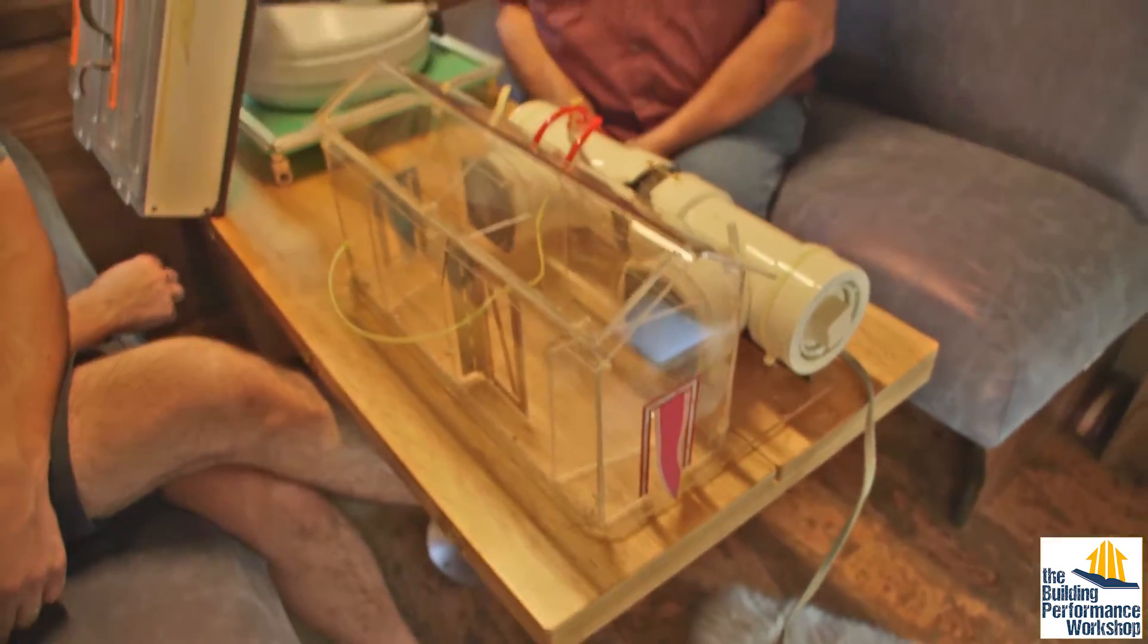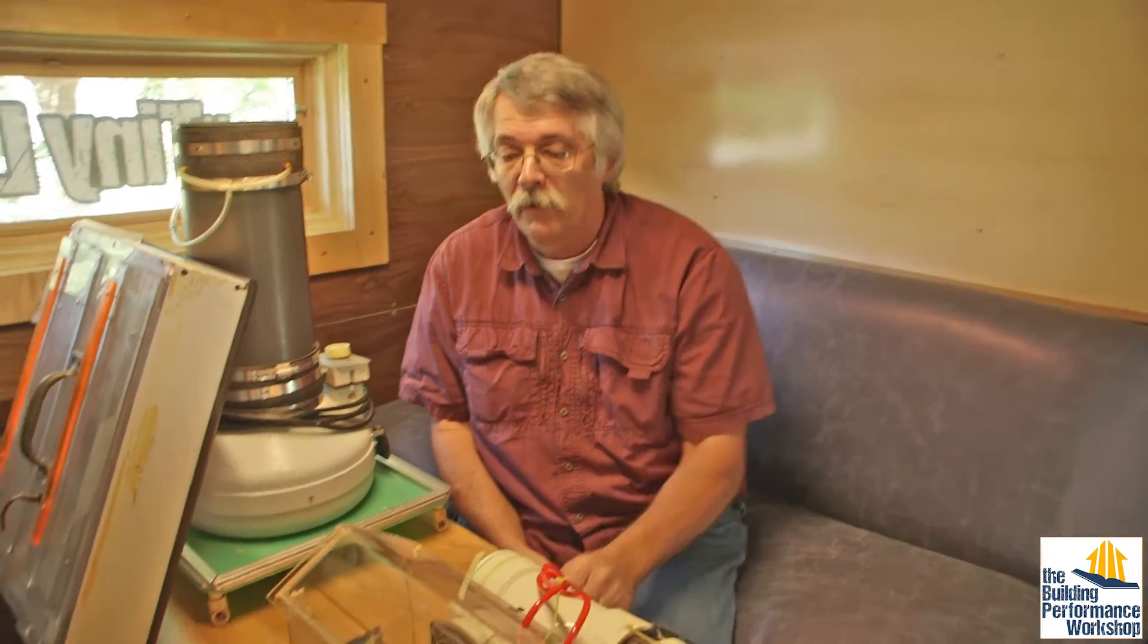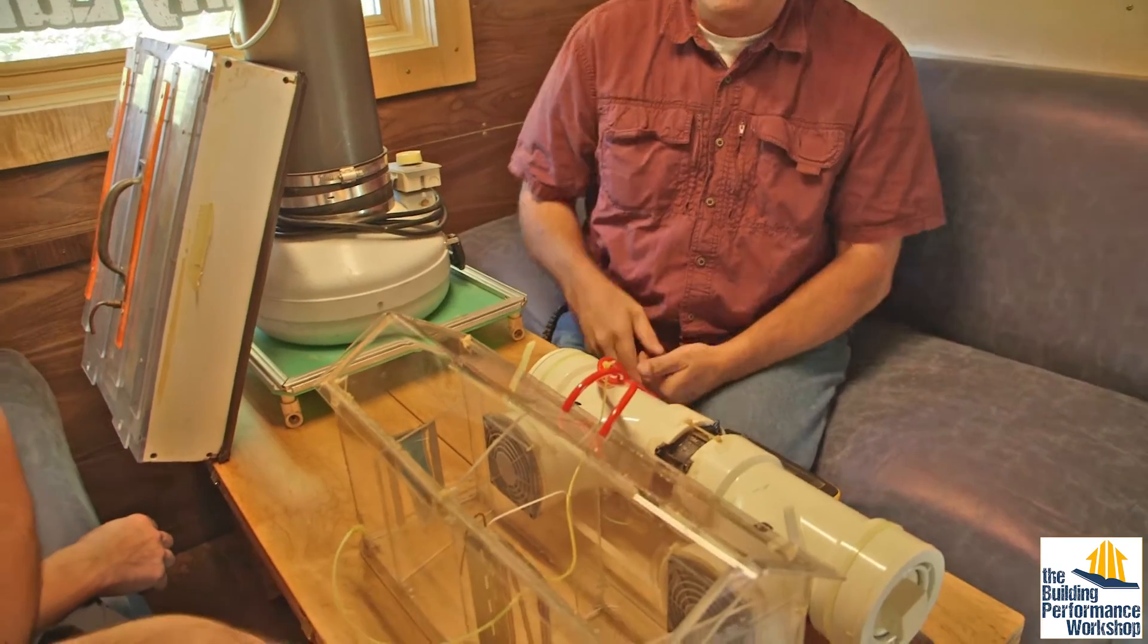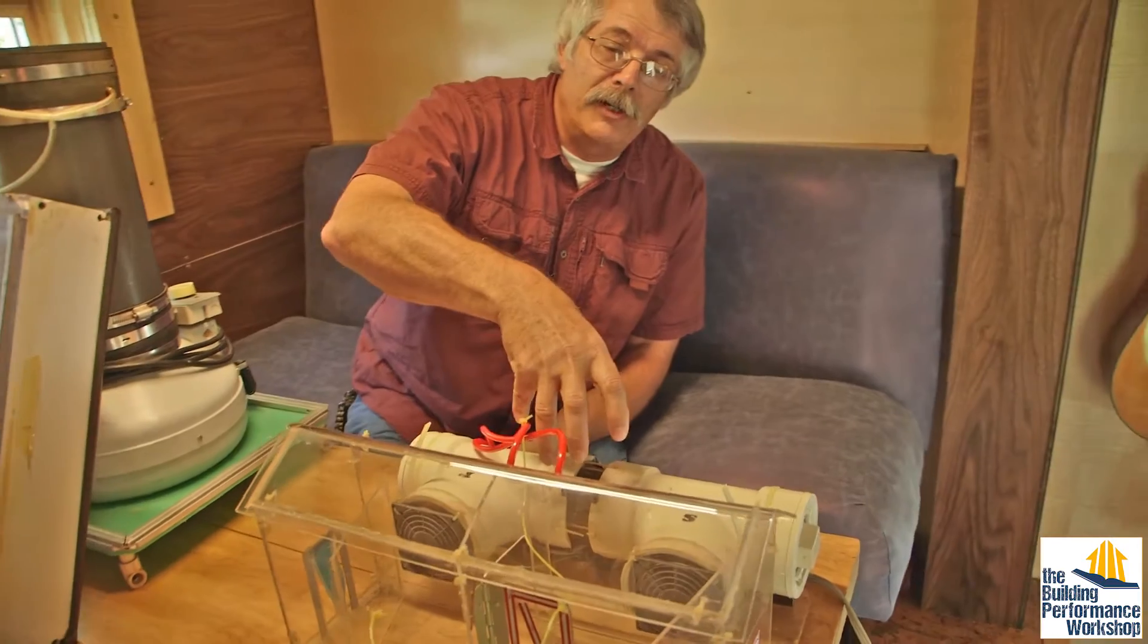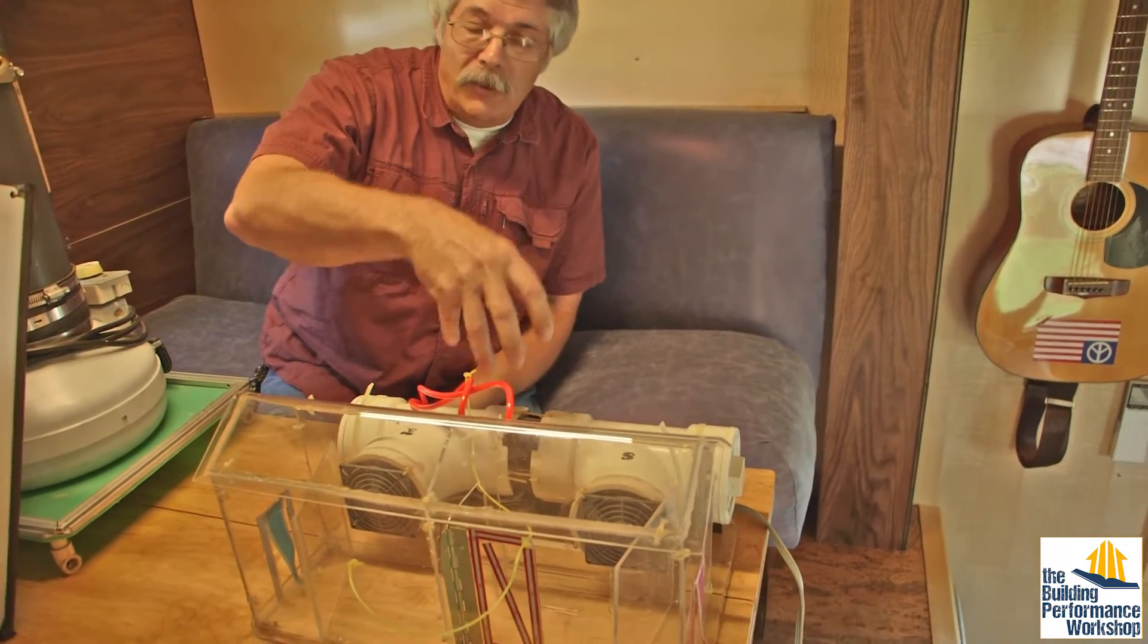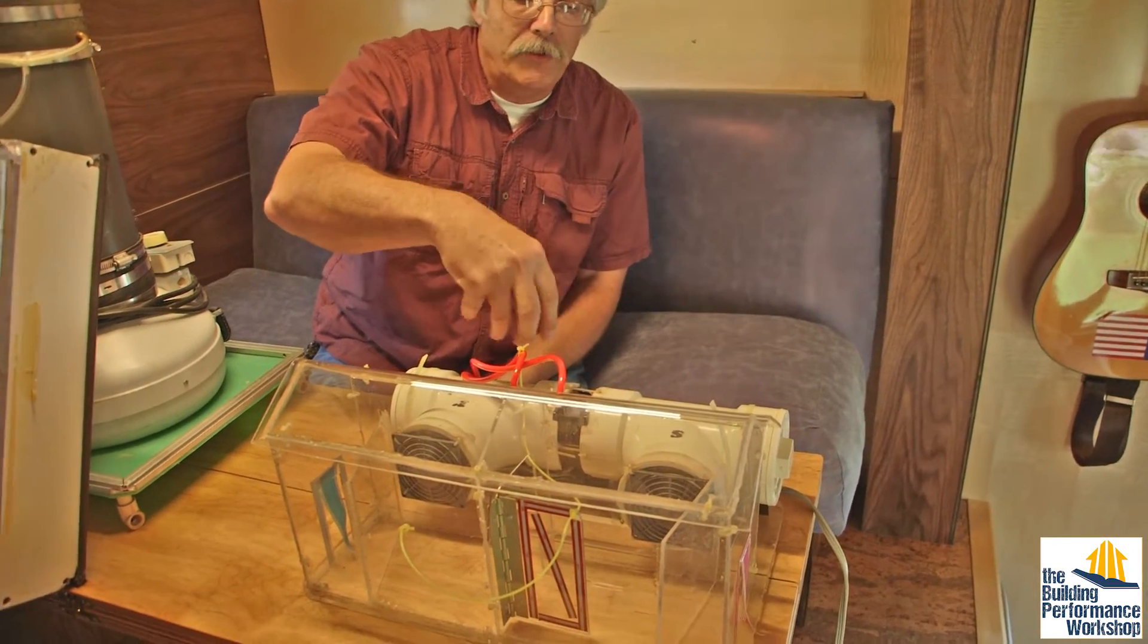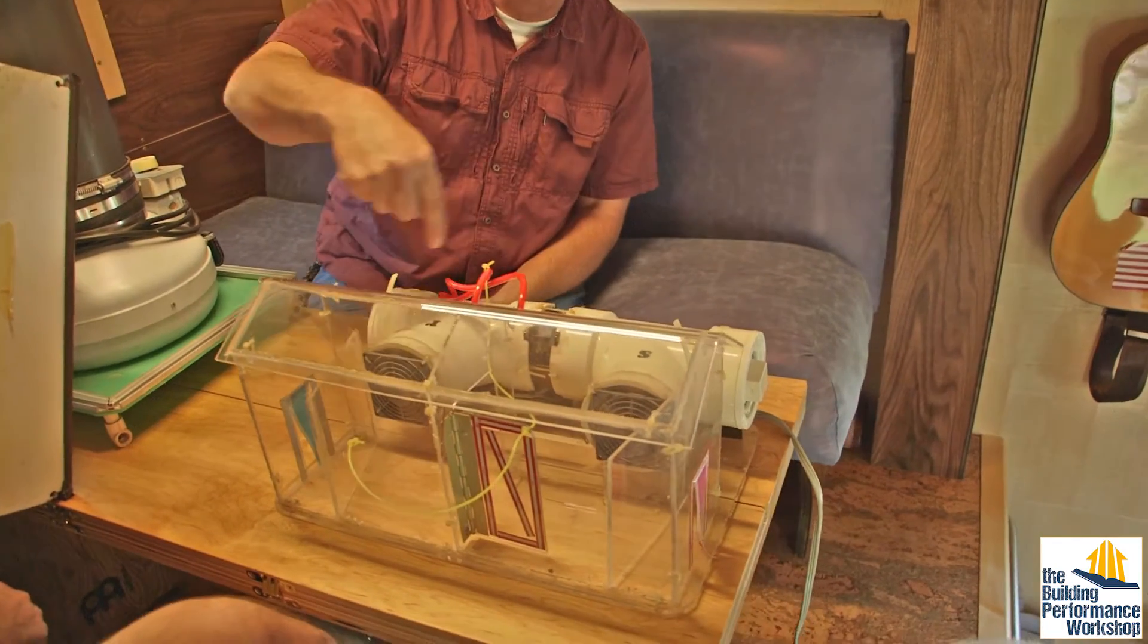Now, what happens is that in Florida, we really like air conditioning. So we'll turn on our air conditioner. And what's supposed to happen is that the air is supposed to come from the main body to the return, pass through the air conditioning unit, air handlers, filtered, cooled, and then goes back to the house and the cycle repeats.